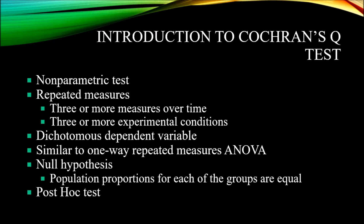The Cochrane's Q-Test is a non-parametric test used for repeated measures. We can think of repeated measures in two ways: in the case of the Cochrane's Q-Test, three or more measures over time, or three or more experimental conditions. The Cochrane's Q-Test uses a dependent variable measured at the nominal level of measurement, and more specifically, dichotomous — so zero or one, or yes or no: two mutually exclusive categories.